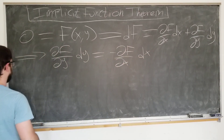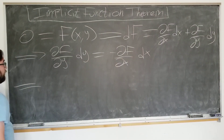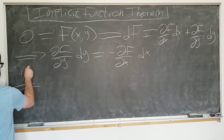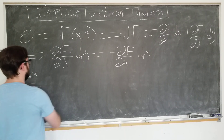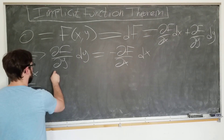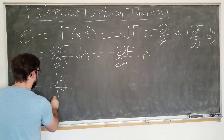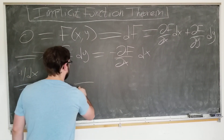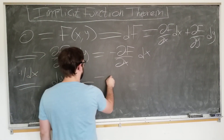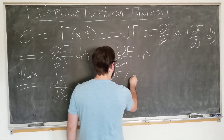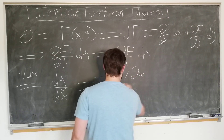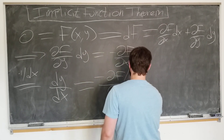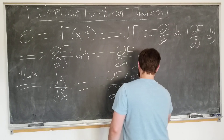We can go ahead and divide both sides by dx to obtain dy/dx, which after dividing is equal to minus ∂f/∂x over ∂f/∂y.